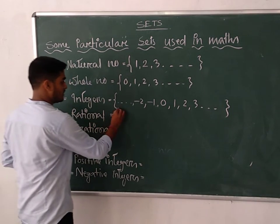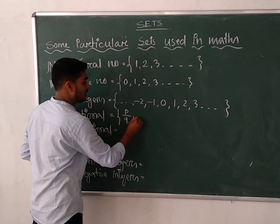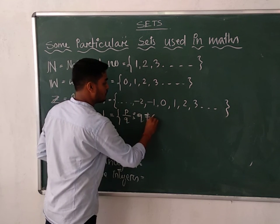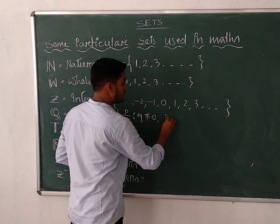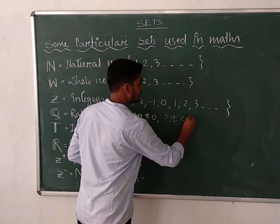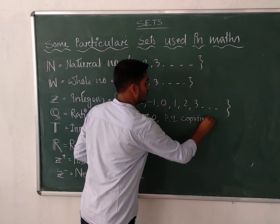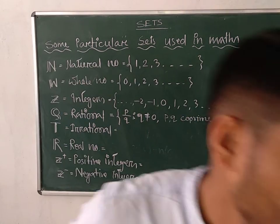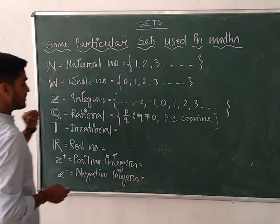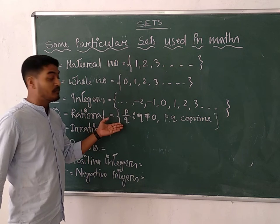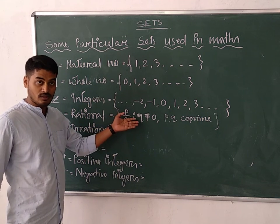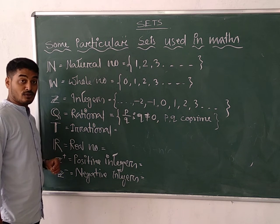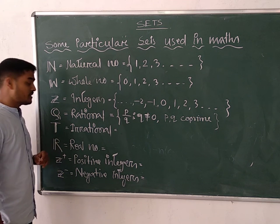Rational numbers: the numbers which can be expressed in the form of p/q, such that q should not be equal to 0, and p and q are co-prime — that means they have only one common factor. These numbers are known as rational numbers.